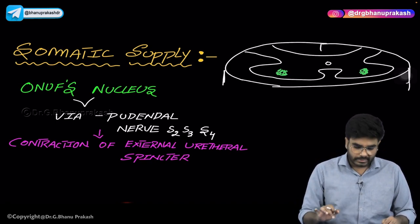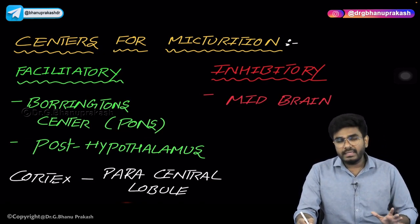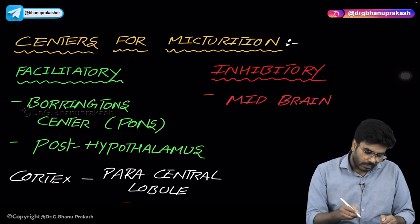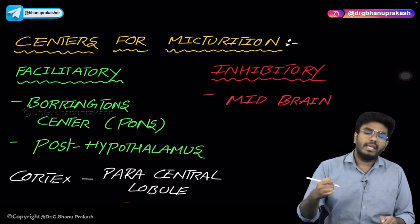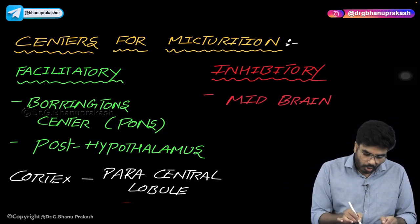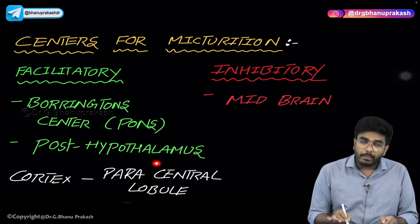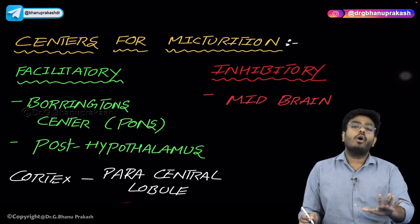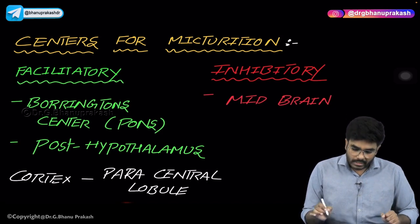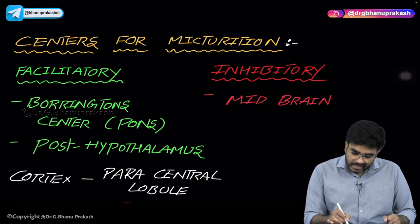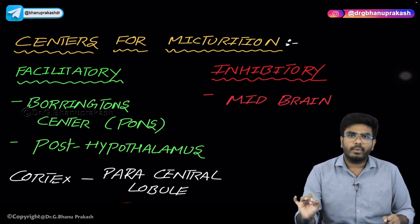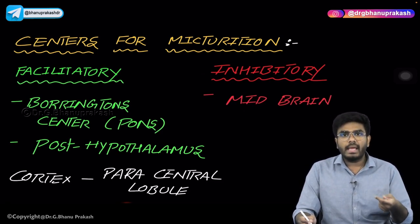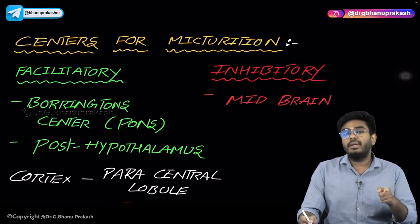There are brain centers that facilitate and inhibit micturition. The facilitatory centers are: Barrington's center in the pons, the posterior hypothalamus, and the paracentral lobule in the cortex — all help in voiding the bladder. The inhibitory centers for micturition are located in the midbrain. So there are three facilitatory centers (Barrington's center in pons, posterior hypothalamus, paracentral lobule) and one inhibitory center in the midbrain.